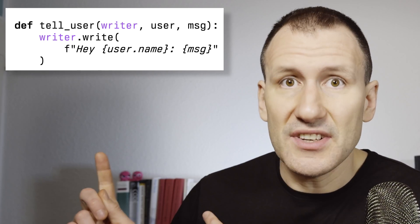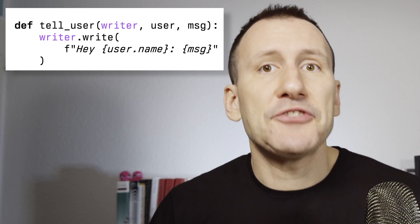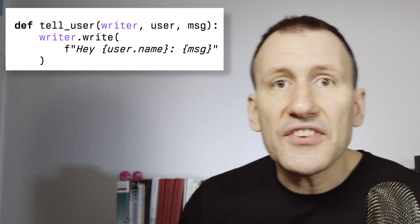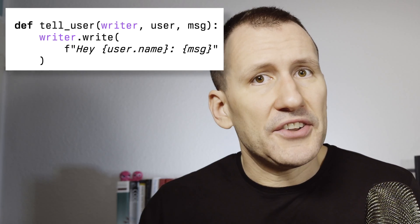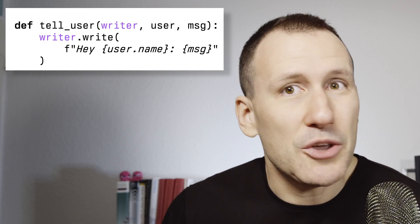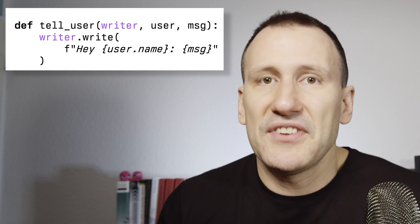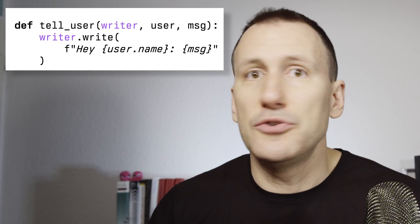And this is injection because the writer dependency is passed from the outside and tell user has no clue what it is and how it's created. It only cares it has a write method. Now some people might start arguments what exactly constitutes dependency injection and what is just passing arguments. But I don't find this discussion useful at all.